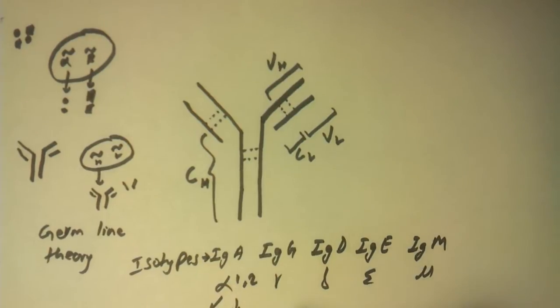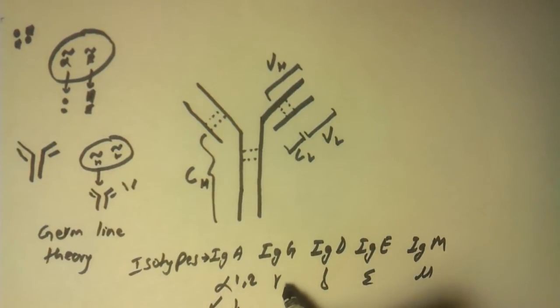And gamma has four different sub-isotypes: gamma 1, 2, 3, 4. So that makes up IgG1, IgG2, IgG3, and IgG4. IgD, IgE, and IgM don't have any sub-isotypes.